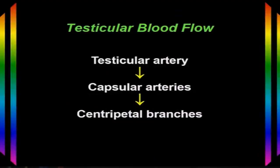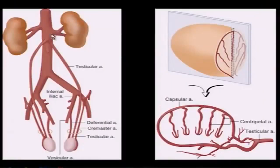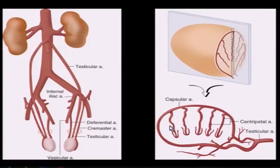The blood flow to the testicle comes via the testicular artery, and that artery provides a branch to the capsule of the testicle, which travels around the periphery of the testicle and gives branches into the parenchyma called centripetal branches. A diagram shows the testicular artery extending to the scrotum, where it branches into the capsular artery at the periphery and gives off those centripetal branches to provide blood flow into the testicular parenchyma.